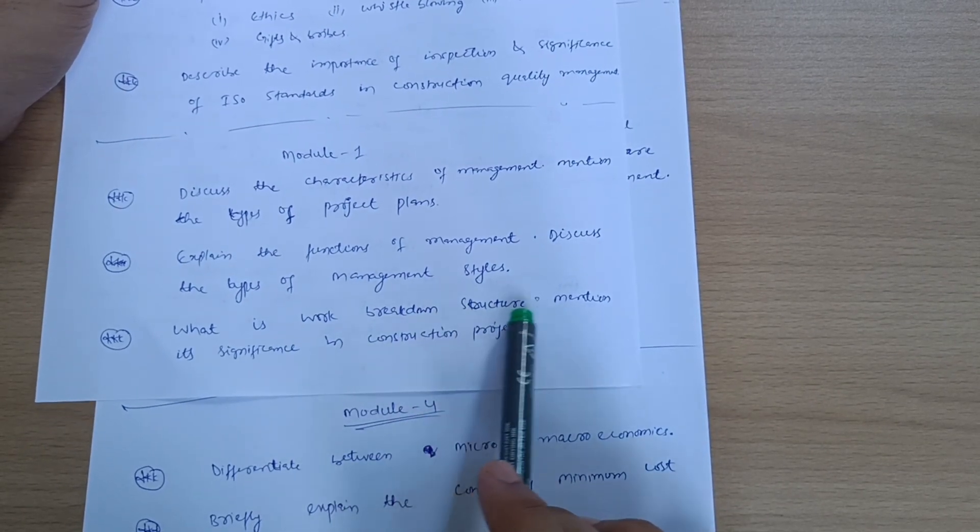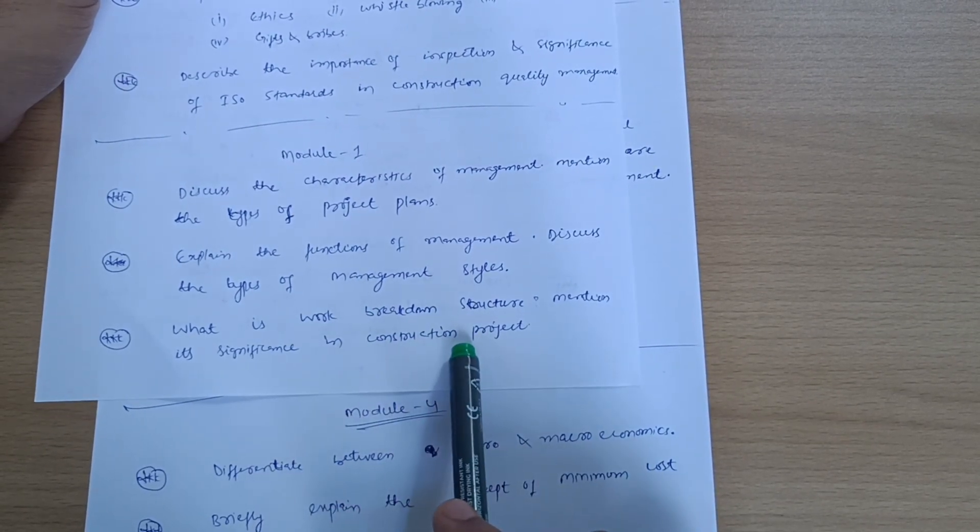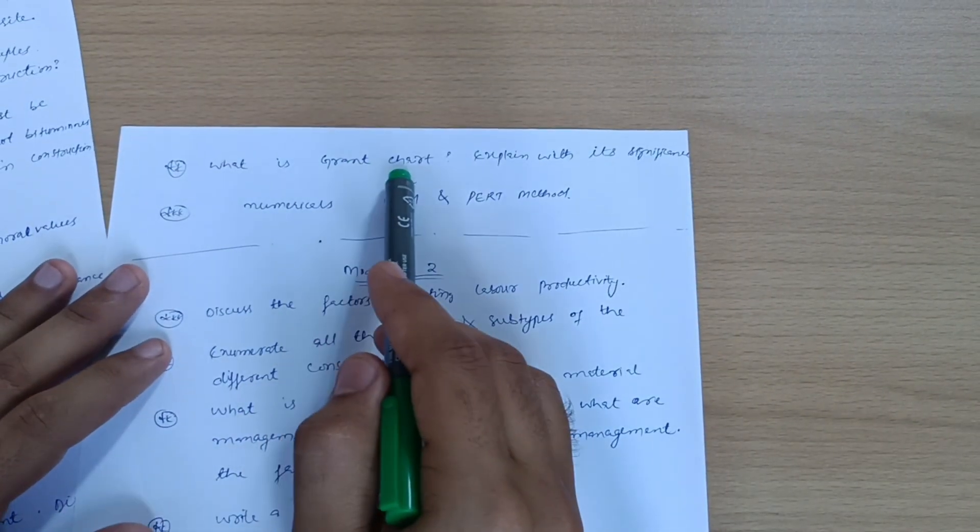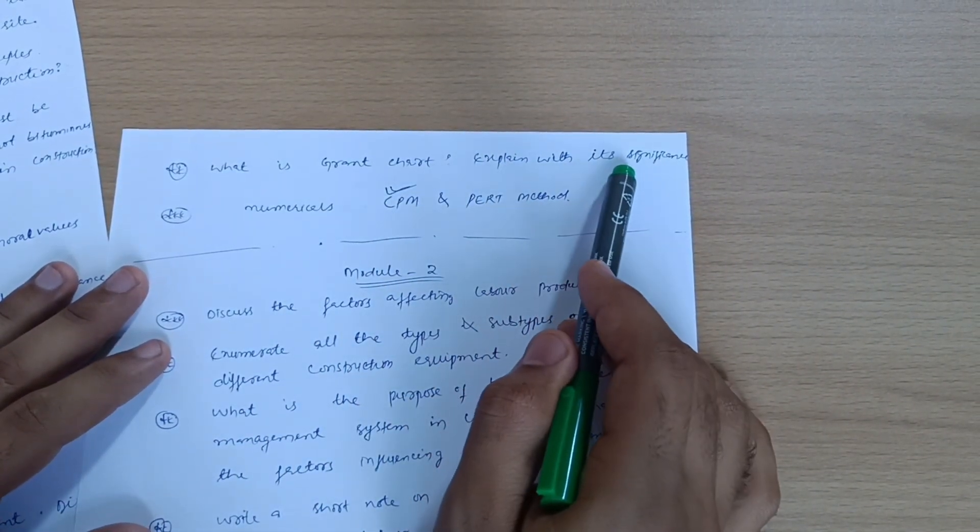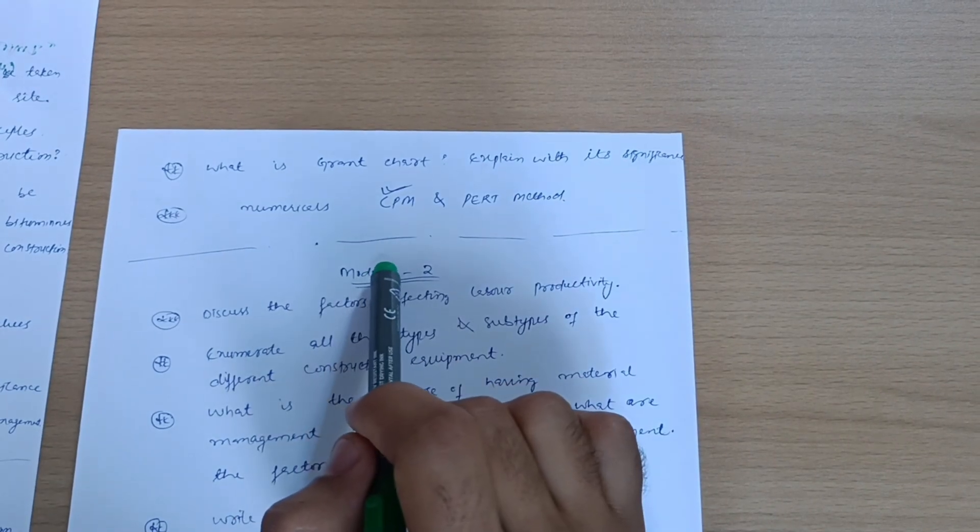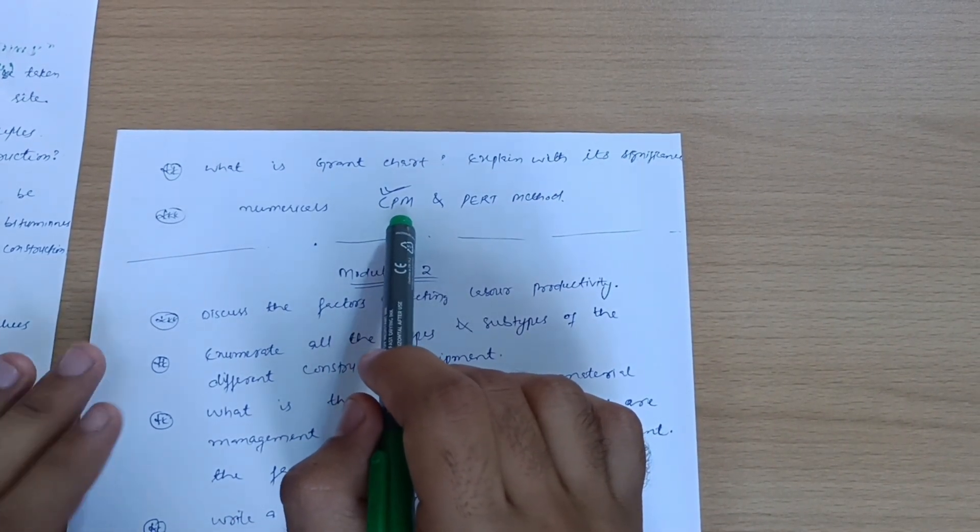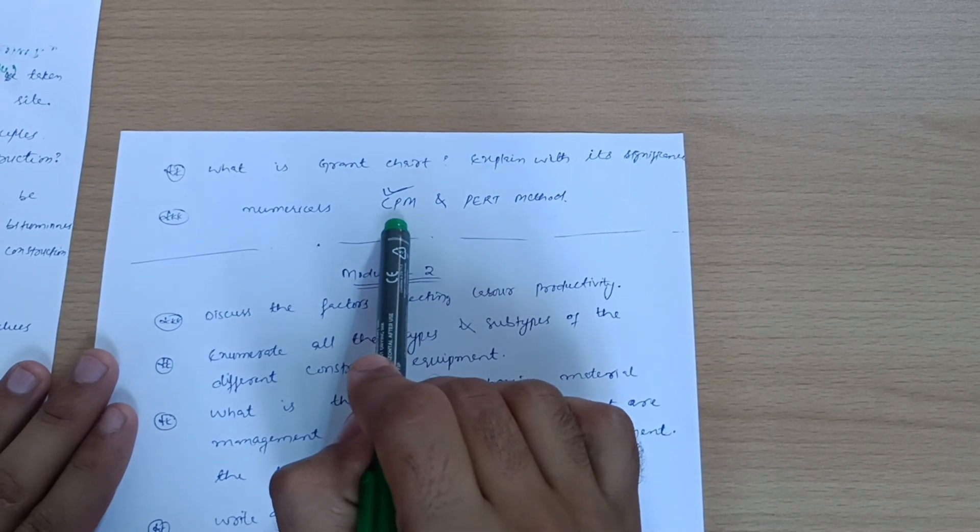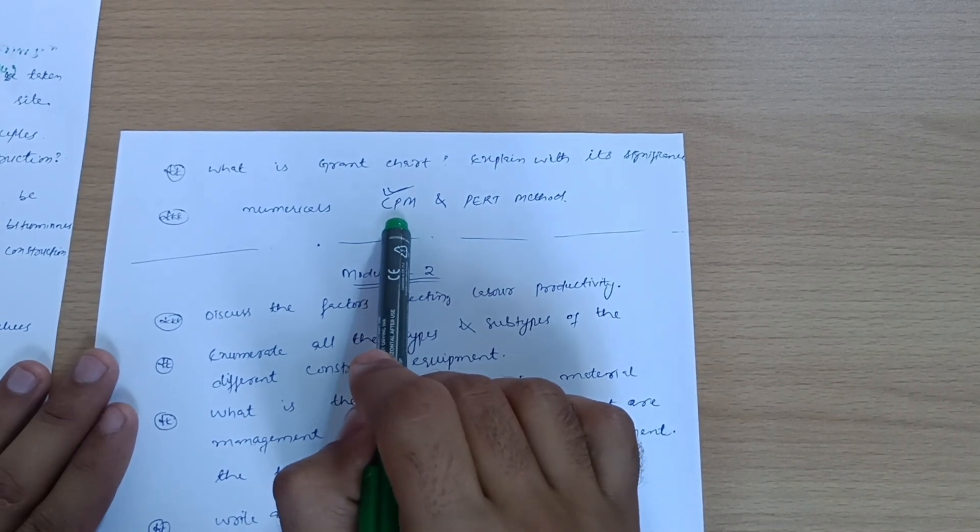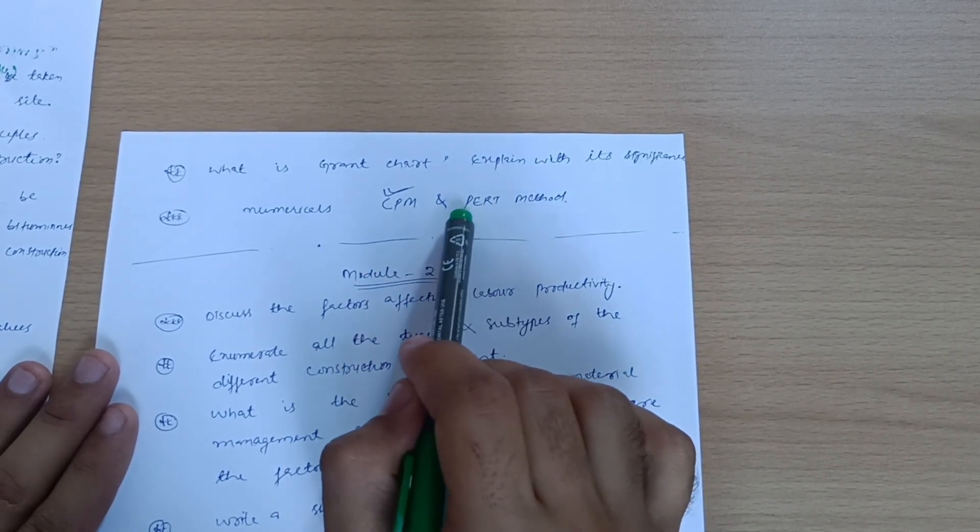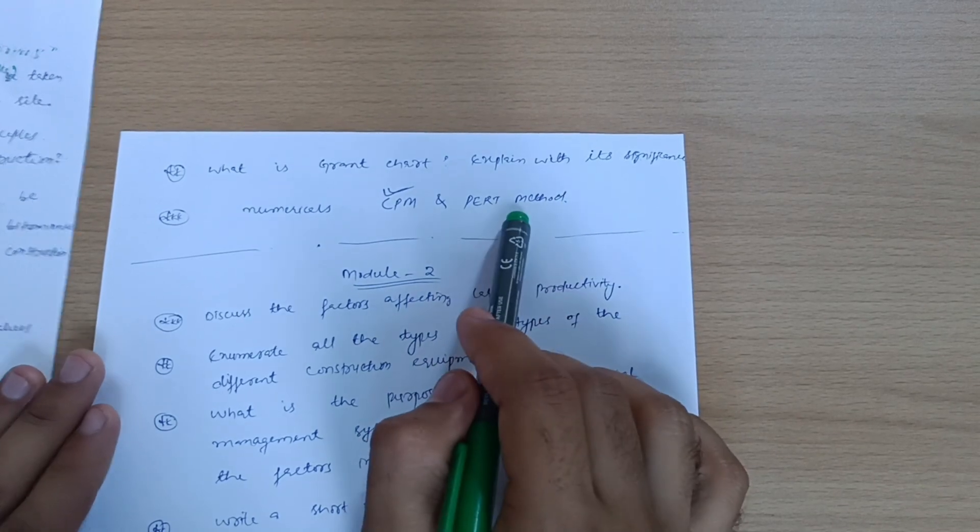What is work breakdown structure? Mention its significance in construction projects. Next, what is Gantt chart? Explain with its significance. And some numericals are there, like critical path method, where you are supposed to calculate the critical path. You have to find critical path.